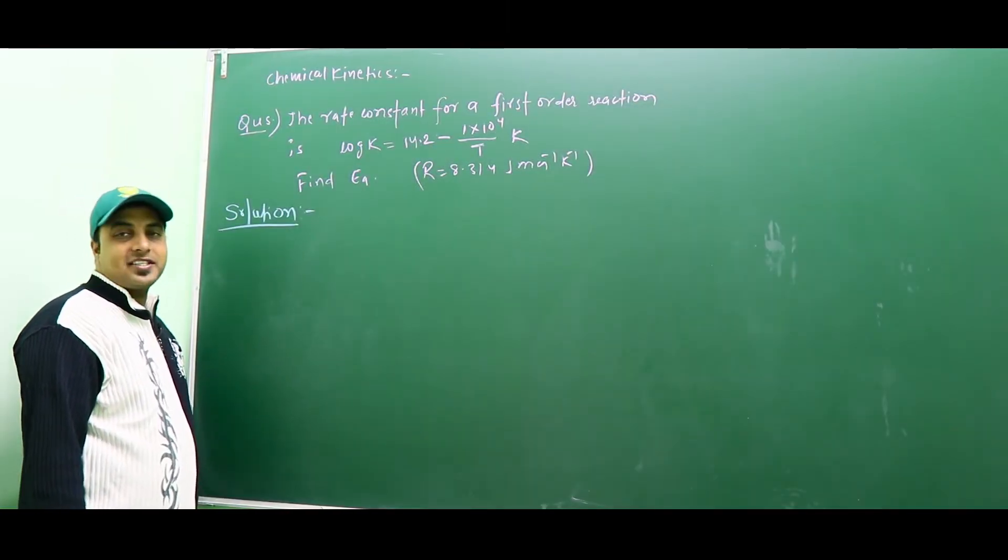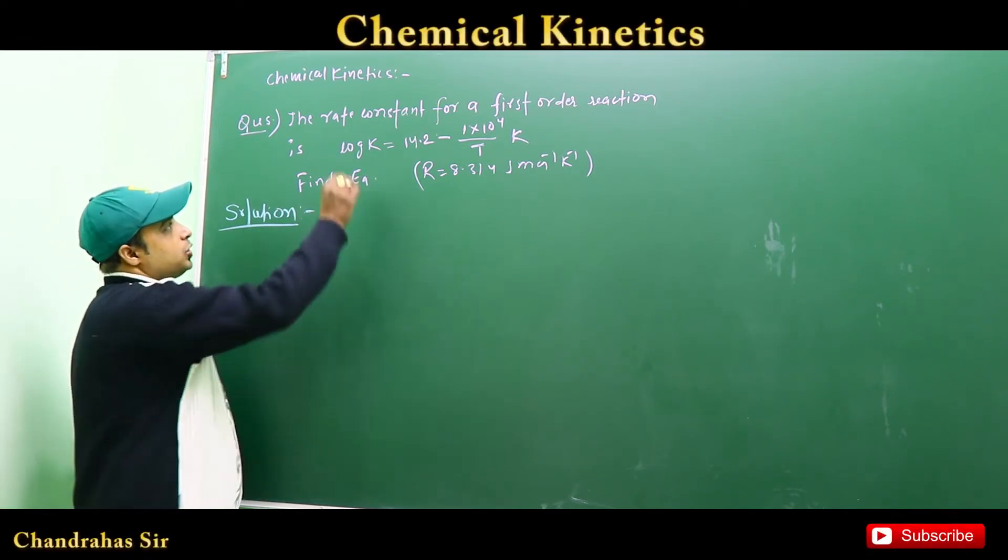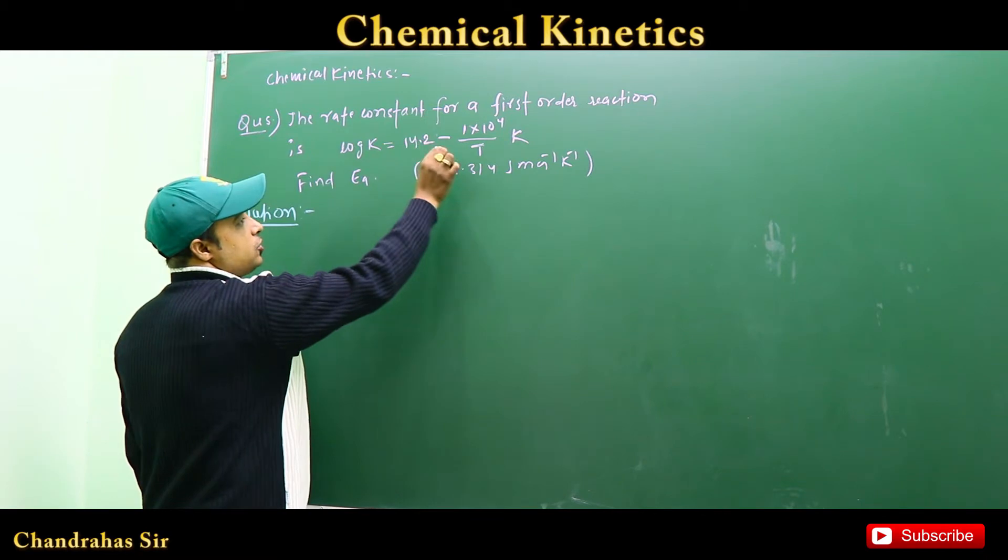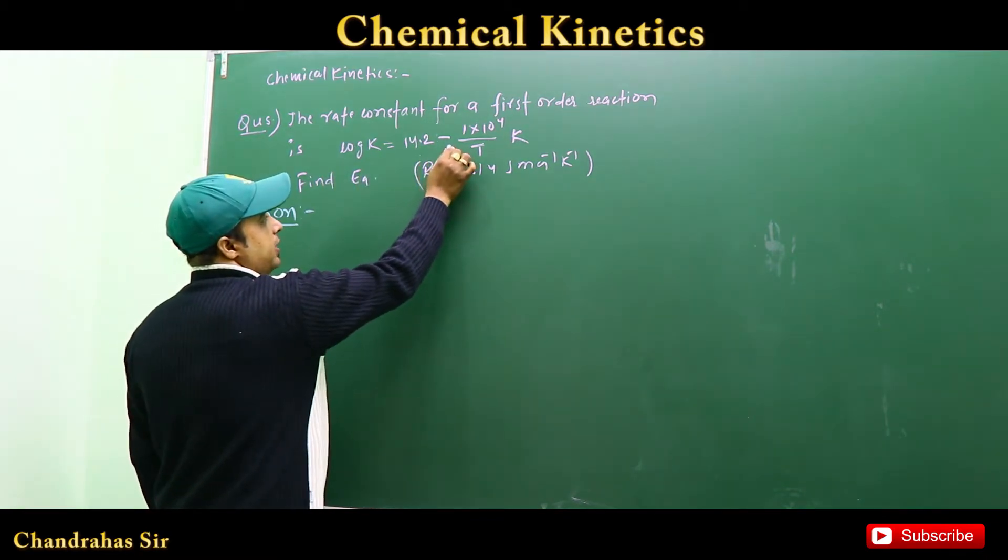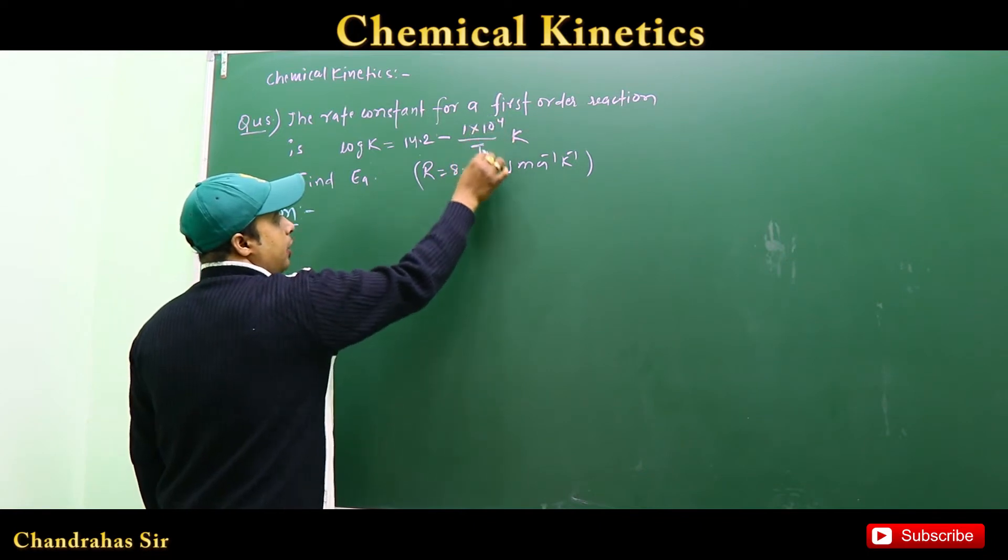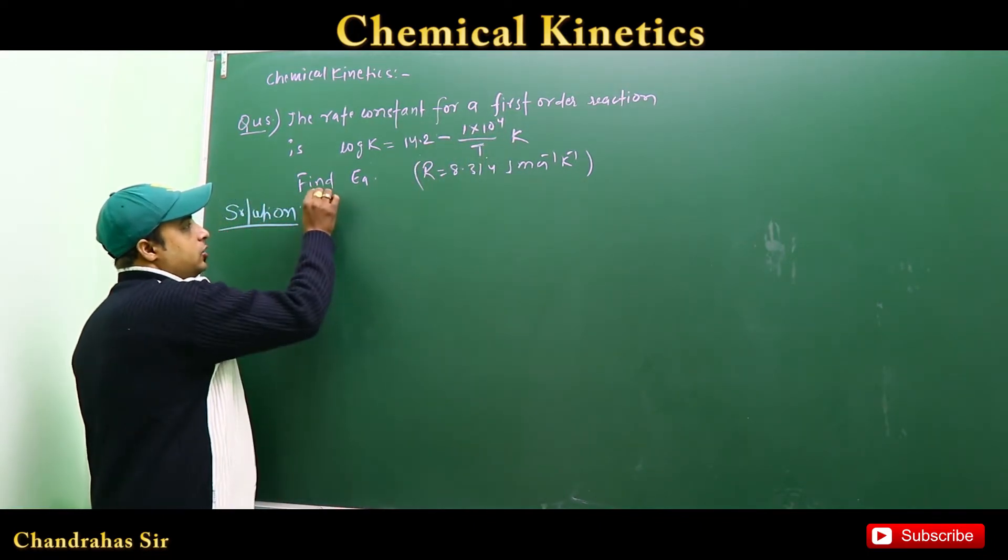I will start the question of the day, the second part. Chemical kinetics question: The rate constant for a first-order reaction is log K equal to 14.2 minus 1 into 10 to the power 4 upon T. Find the activation energy.